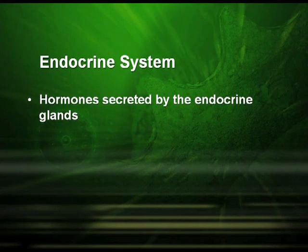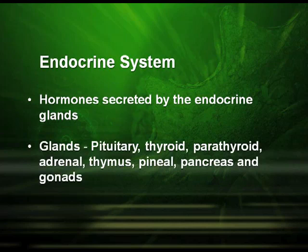The endocrine system includes the hormones which are secreted by the endocrine glands. These are the pituitary, thyroid, parathyroid, adrenal, thymus, pineal, pancreas and gonads.